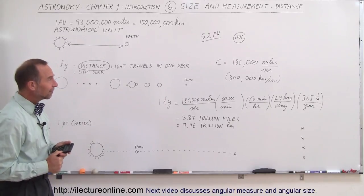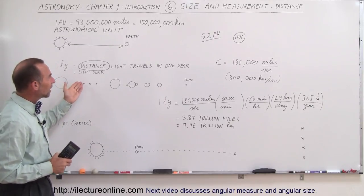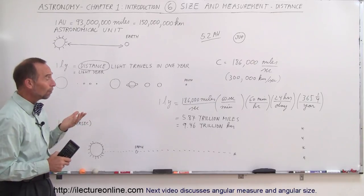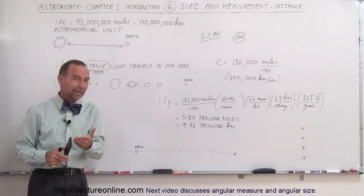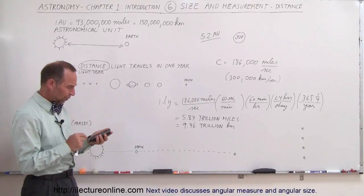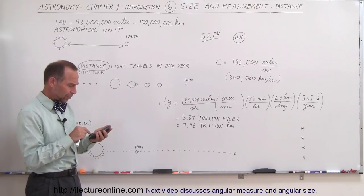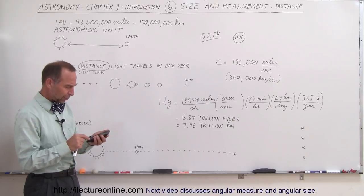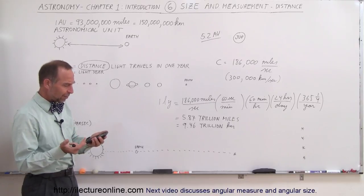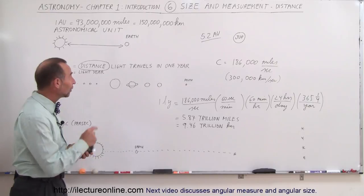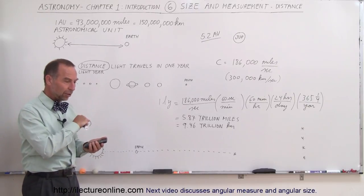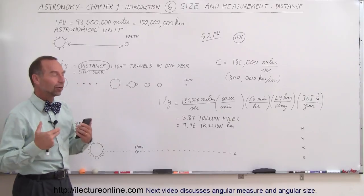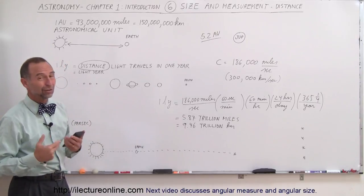If it takes about eight minutes to make it between the sun and the earth, how long does it take for light to reach Pluto? Since Pluto is about 40 astronomical units away, so we take 8.33 times 40, that's 333.2 divided by 60, it's about five and a half hours. So if light travels from the sun to Pluto in five and a half hours, imagine how far light can travel in a year. It's quite amazing.